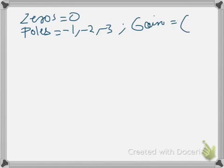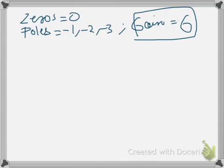In our second example the zero of the given transfer function is zero itself, and the poles are minus 1, minus 2, and minus 3. We also have a new thing here, which is the gain is equal to 6. In the last example when no gain was given, you can assume the gain is equal to 1.